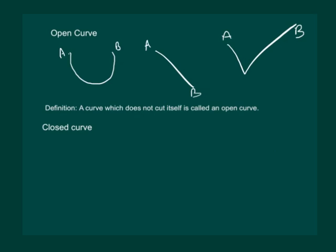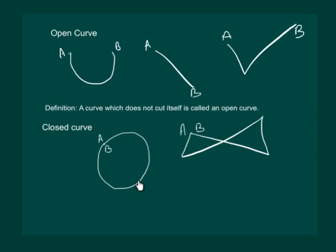Now let us try to understand closed curve. Let us draw some curves. Take a point A, and from A without lifting the pencil, say we draw a circle. Then ending point is B. Let us draw another figure. Again ending point is B. In both these curves, the curve cuts itself at its starting point. So we can say that it is a closed curve.